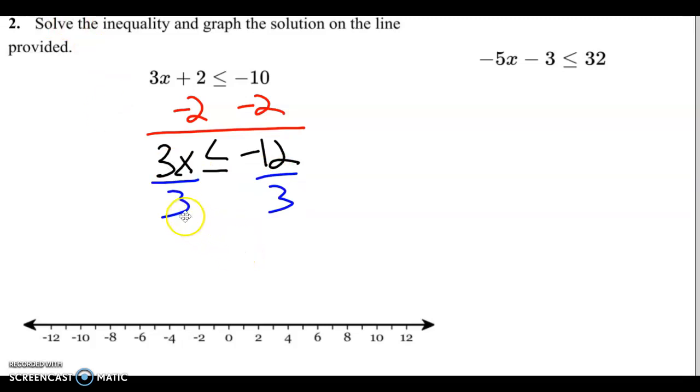So because we divided by a positive 3, we do not change the sign around. The 12 is negative but the 3 is positive, so we leave the inequality the same. And we get x is less than or equal to negative 4. So then we go to negative 4 on the number line. And since it's equal to, we fill in the circle. And then we go left. And it goes the same arrow as the inequality sign.